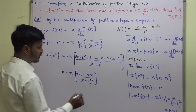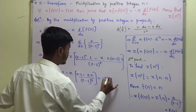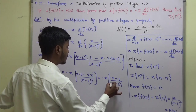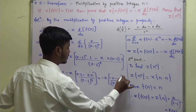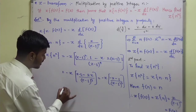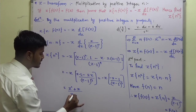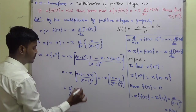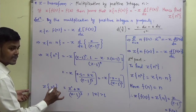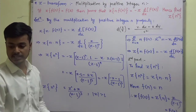Solving the numerator: z minus 1 minus 2z equals minus z minus 1. So the expression becomes minus z times (minus z minus 1) upon (z minus 1) cubed. Taking the minus sign common gives: z times (z plus 1) upon (z minus 1) cubed, which equals (z squared plus z) upon (z minus 1) cubed. This is the Z transform of n squared.